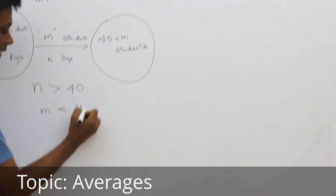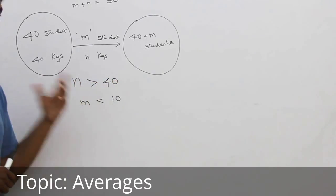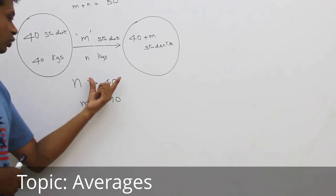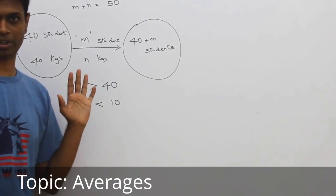Now, m should be less than 10. We know this, n is more than 40, m is less than 10. m could be 9, n could be 41, m could be 8, n could be 42, and so on. All different combinations.